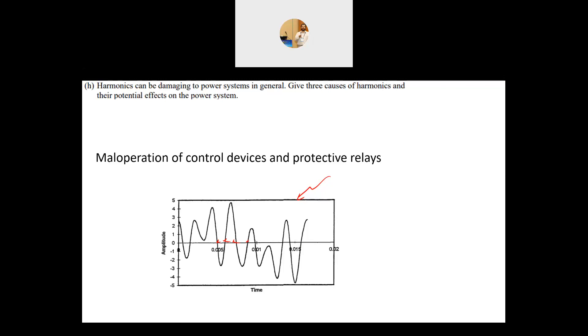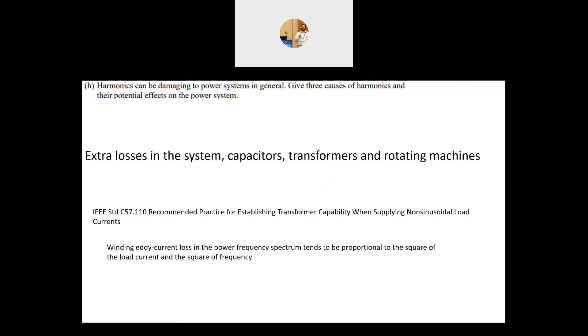Another severe issue with harmonics is it causes extra losses in capacitors, transformers, and rotating machines. The current is not only the fundamental but has harmonics. As per IEEE standard C57.110, the winding eddy current loss in transformers at power frequency rating is proportional to the square of the current—I squared R—but also proportional to the square of the frequency.